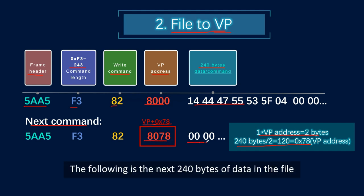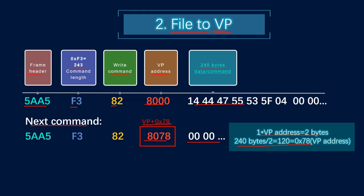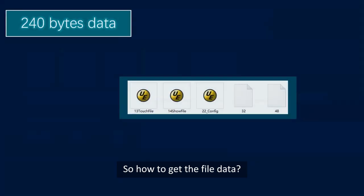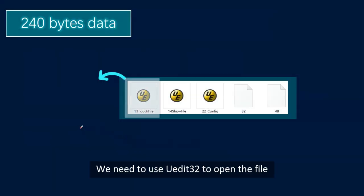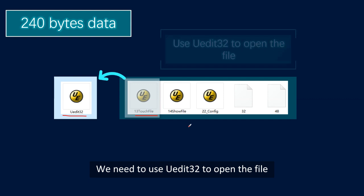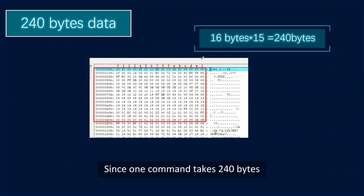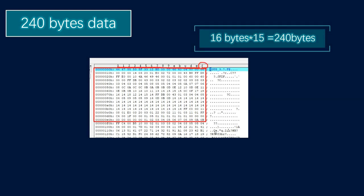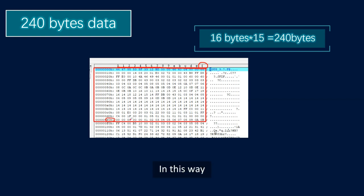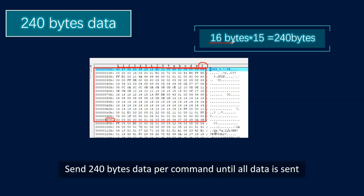The following is the next 240 bytes of data in the file. To get the file data, we need to use UDIT32 to open the file. This is the file data page. Since one command takes 240 bytes and one line has 16 bytes, we need 15 lines per command. In this way, send 240 bytes of data per command until all data is sent.